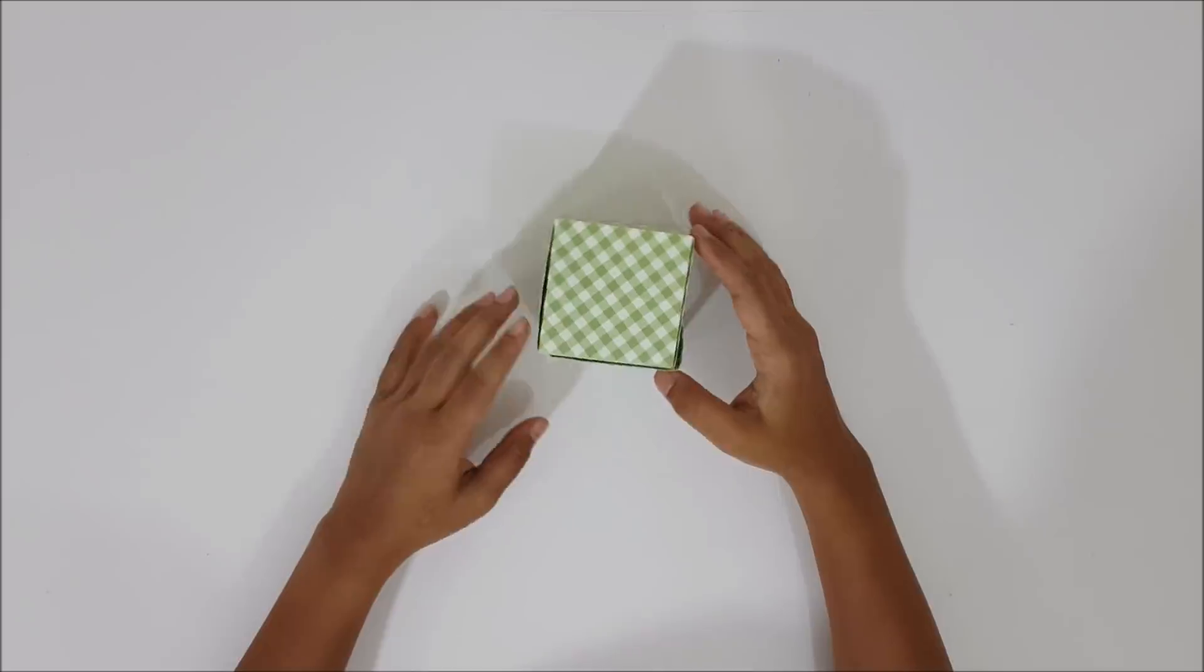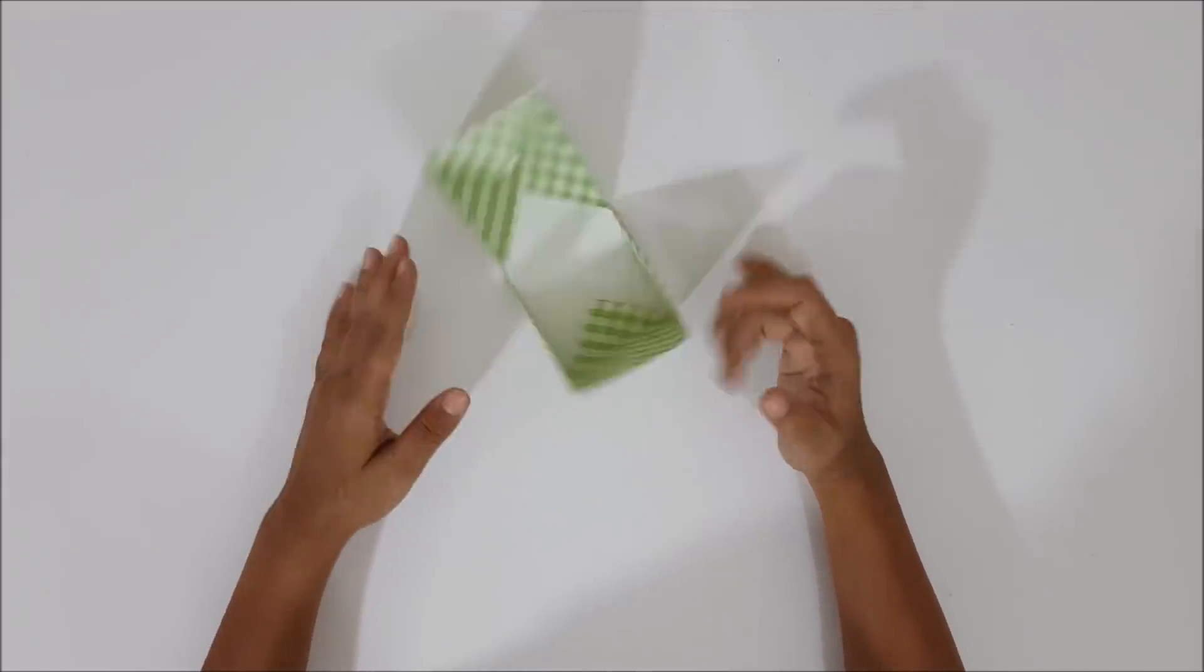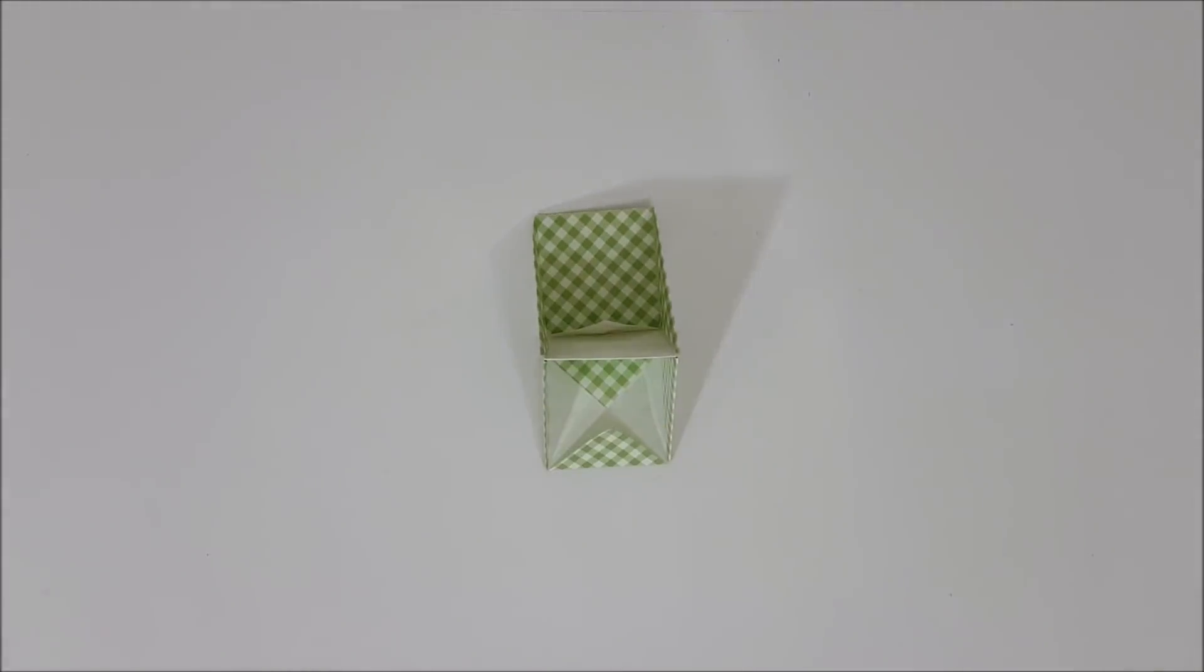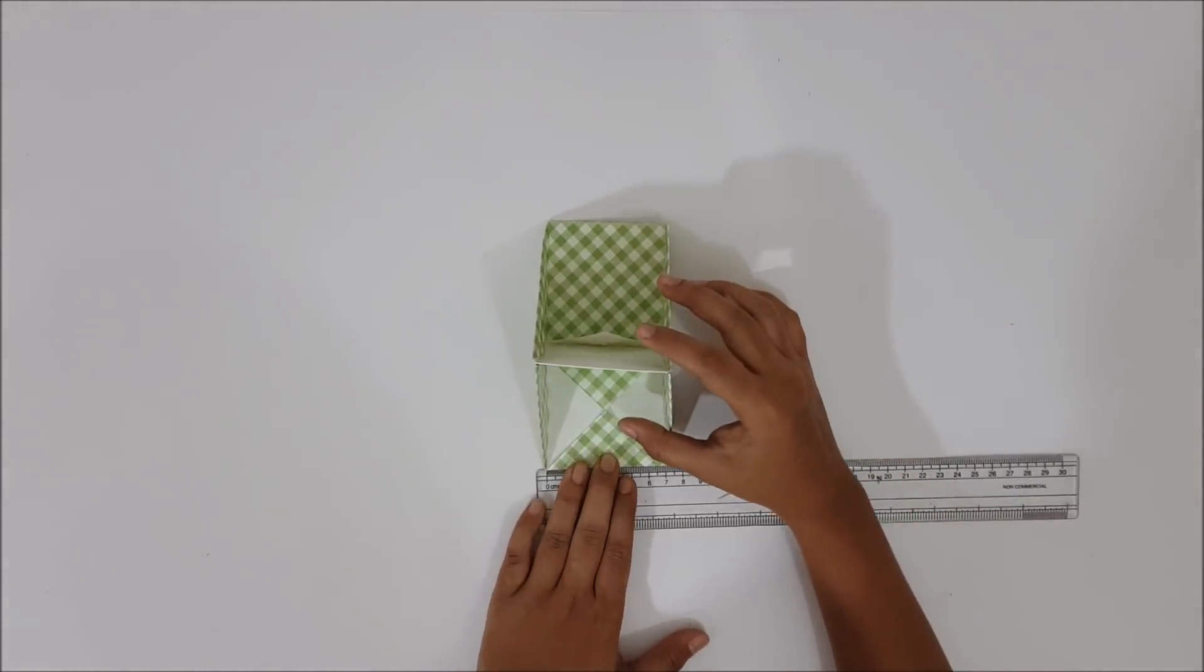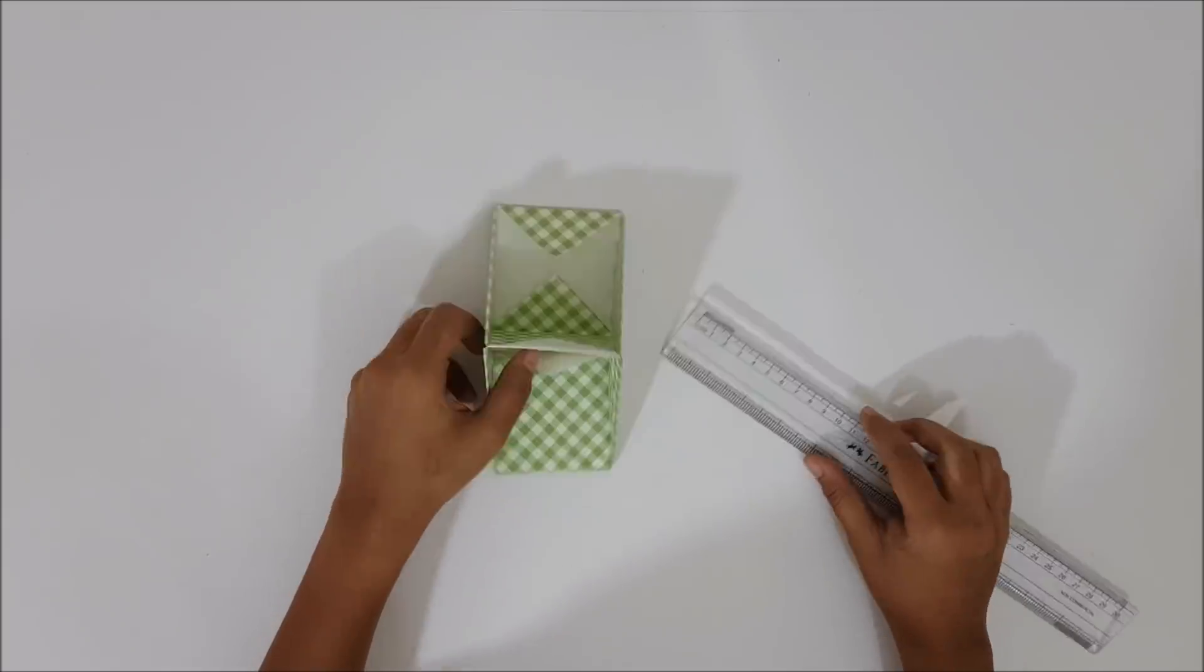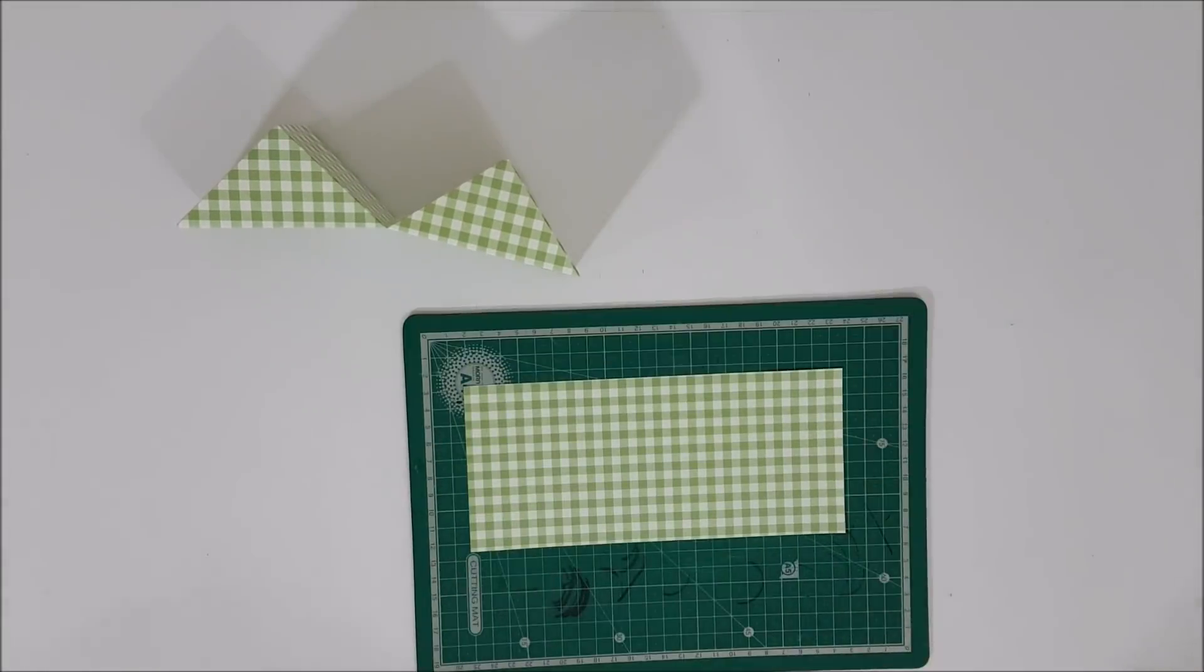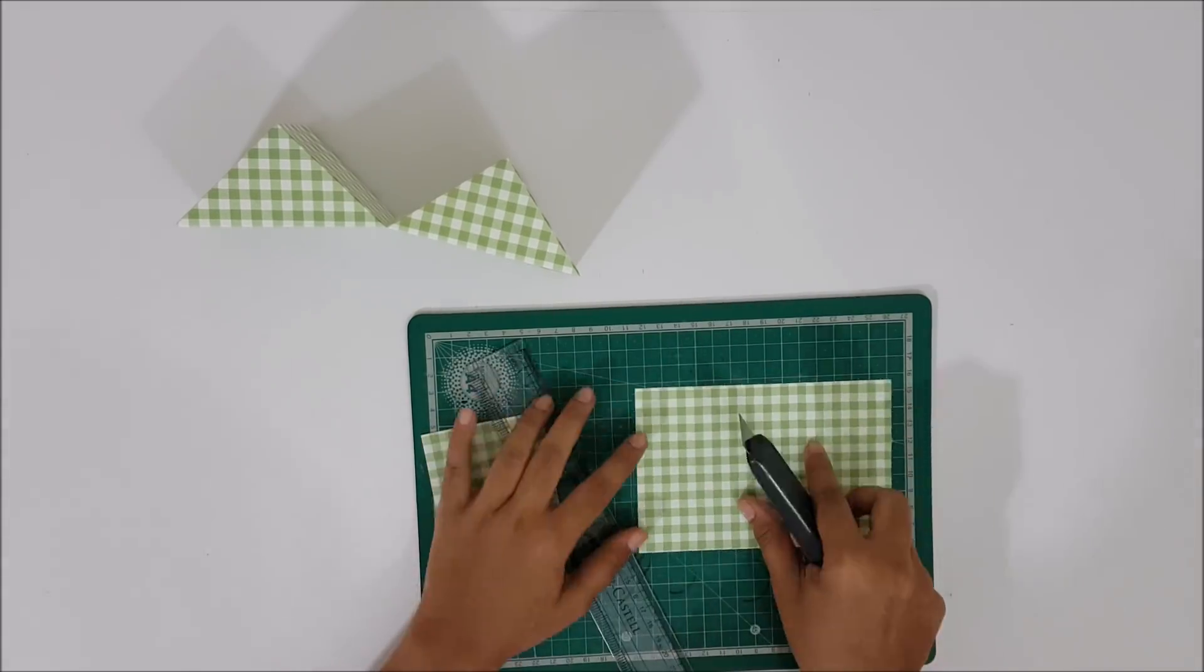Now we have a cube that opens like this. Next, measure the sides of the cube as shown. After we get the measurements, cut 4 small pieces of paper of the measurements as shown.